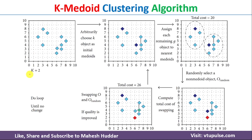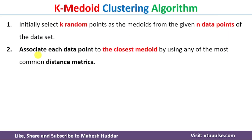Let's say I want to create two clusters, so K equals 2. I select one data point as the first Medoid and a second data point as the second Medoid. Next, we associate each data point from the dataset to the closest Medoid by calculating the distance between each data point and each Medoid, then assigning it to the nearest one.